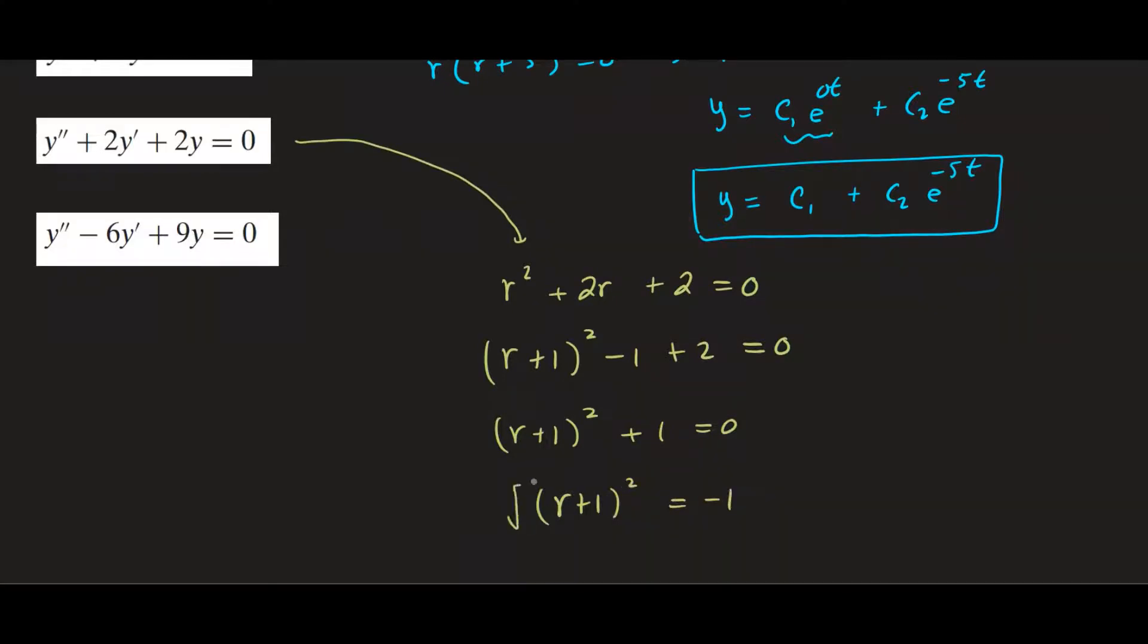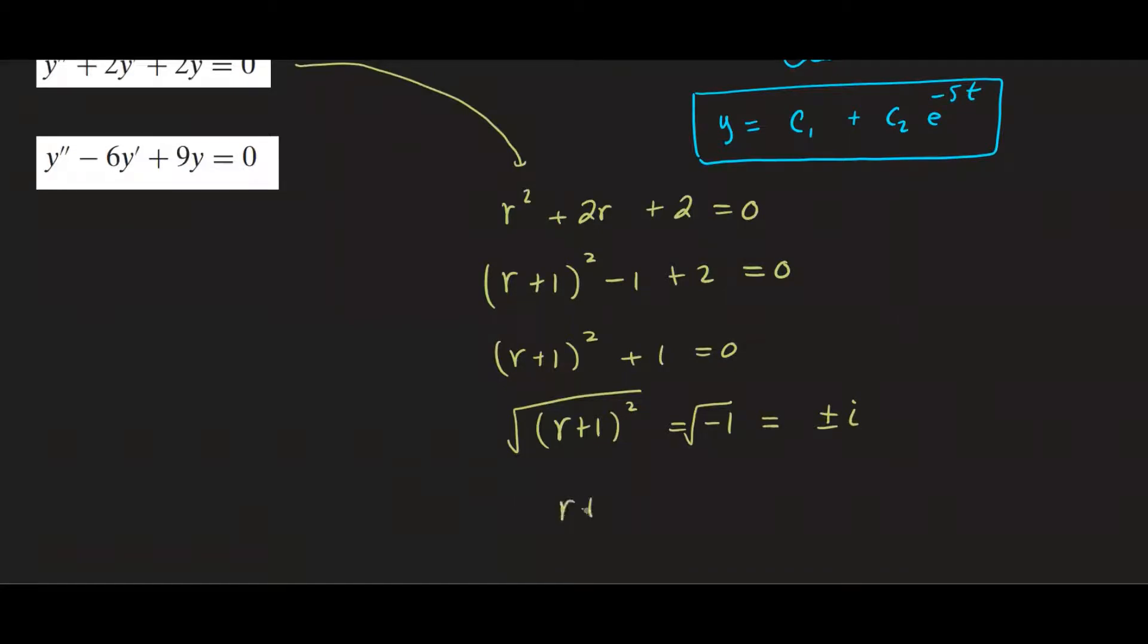And keep in mind as I take the square root on both sides I get plus and minus i which is the imaginary root. And then by solving for r we have by subtracting one, r equals negative 1 plus and minus i. So this equation has complex roots.